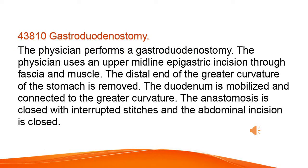Gastroduodenostomy. The physician performs a gastroduodenostomy using an upper midline epigastric incision through fascia and muscle. The distal end of the greater curvature of the stomach is removed. The duodenum is mobilized and connected to the greater curvature. The anastomosis is closed with interrupted stitches and the abdominal incision is closed.